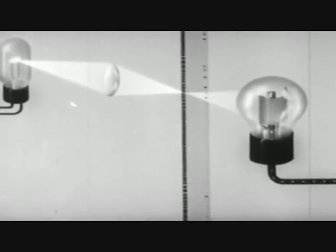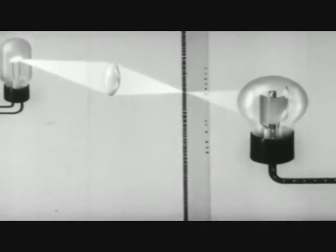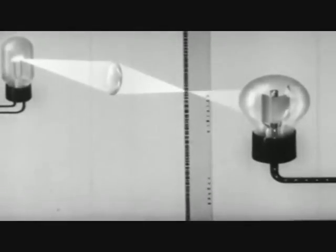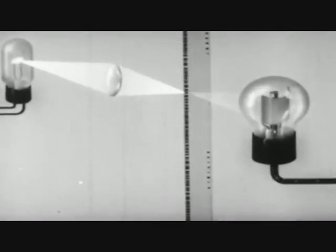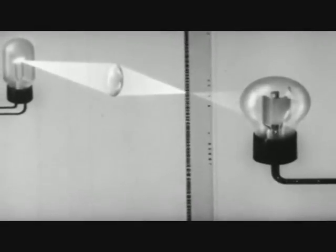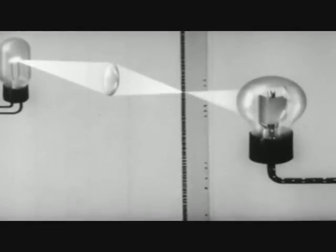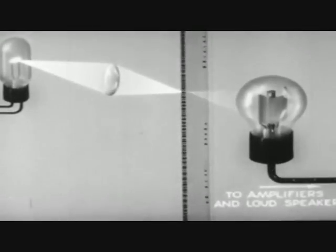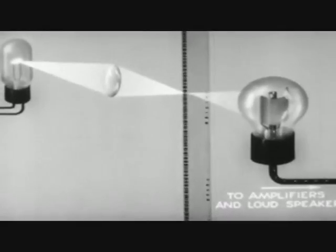This phenomenon is used in the photoelectric cell. Such cells are adapted for soundtrack on film by using ordinary light with the more active metals like potassium or cesium. The varying opaqueness of the soundtrack changes the amount of light reaching the photoelectric cell in the projector. The cell therefore delivers a varying current which is amplified by vacuum tubes and then translated into sound.